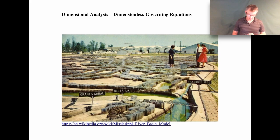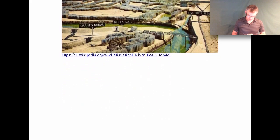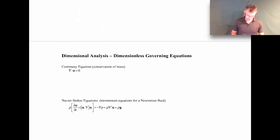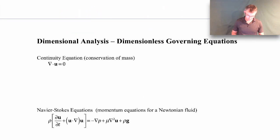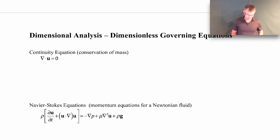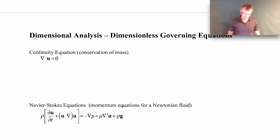So we said we were going to talk about making the governing equations dimensionless. We're going to start by making the continuity equation dimensionless, and then we'll move on to the Navier-Stokes equation. But before we do that, we need to talk about things known as characteristic dimensions.